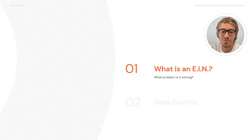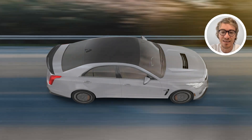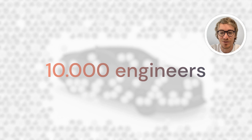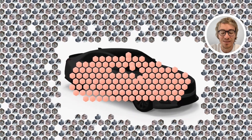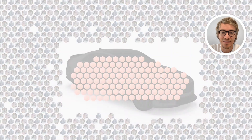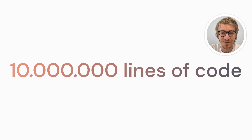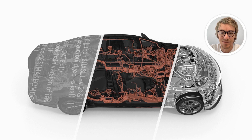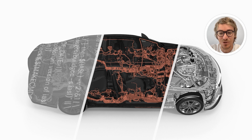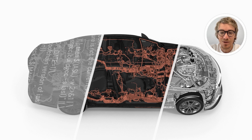Let's start with the problem statement and the challenges we see in development. If you look at a modern product like a vehicle, we have more than 10,000 engineers working on the product, who have to communicate with each other and integrate at the end more than 6,000 parts and more than 100 million lines of software.